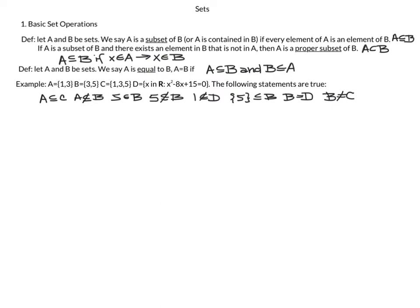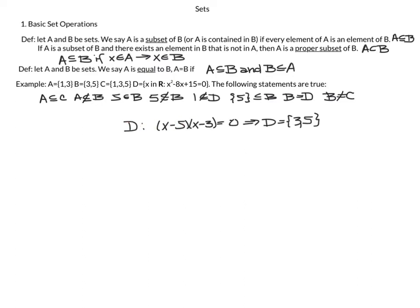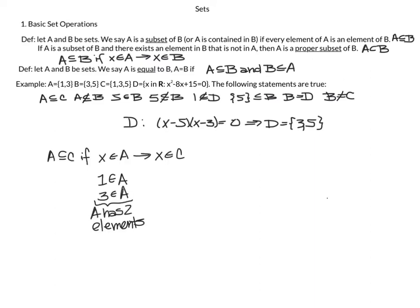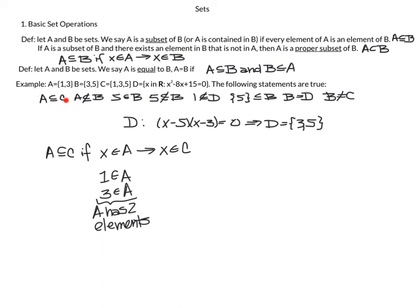We'll do some examples. A = {1, 3}, B = {3, 5}, C = {1, 3, 5}, and D is the set of real numbers X such that X² − 8X + 15 = 0. Looking at D: factoring and solving gives D = 3 or D = 5, so D has two elements, 3 and 5. The following statements are true.